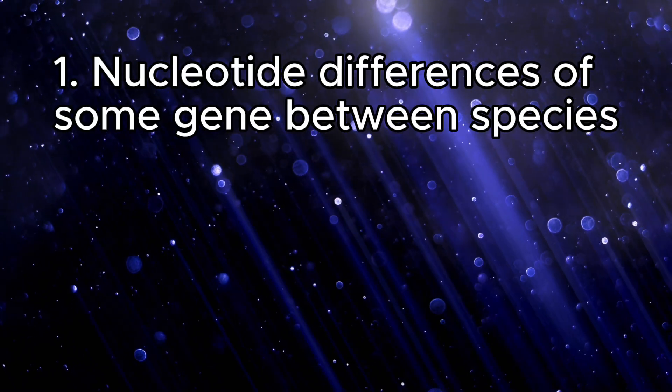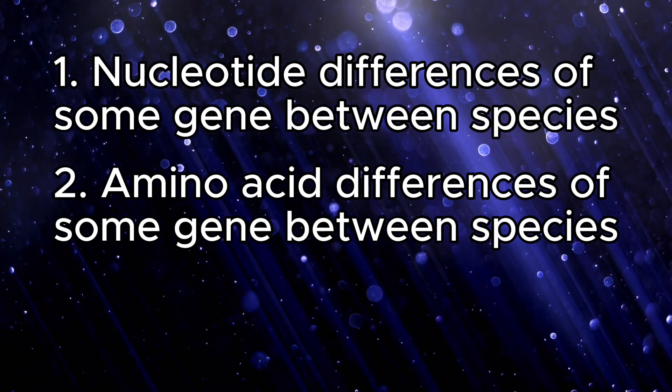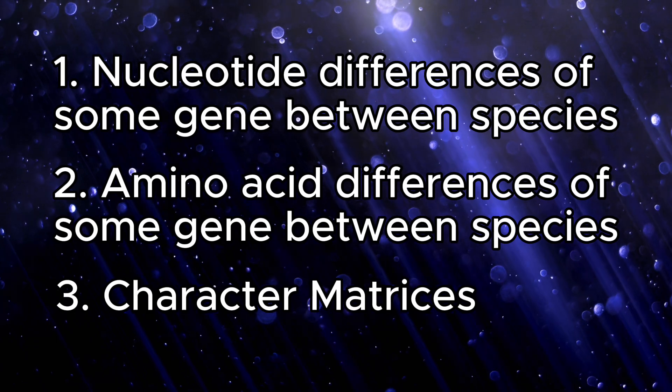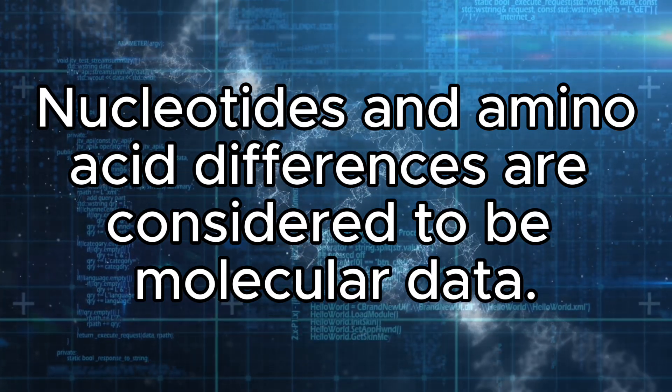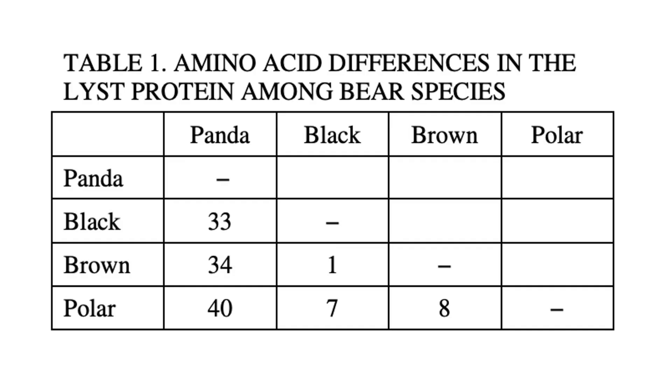In this final part of the video, let's take a quick look at how we can create cladograms from data provided to us by the exam. There are three major types of data that we could be given: one, nucleotide differences of some gene between species; two, amino acid sequence differences of some gene between species; and three, character matrices of various features of species. Nucleotide sequence and amino acid sequence differences are both molecular data. The greater number of differences indicates a longer divergence time frame, during which changes to the sequence of genes or polypeptides could have arisen.